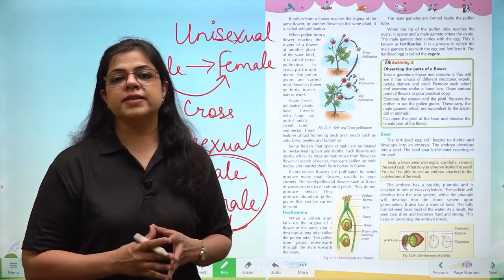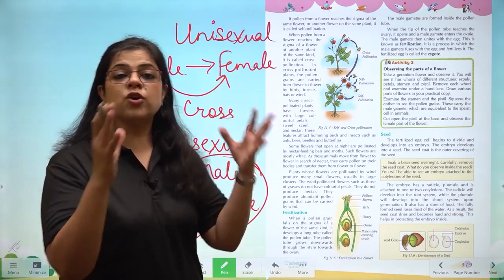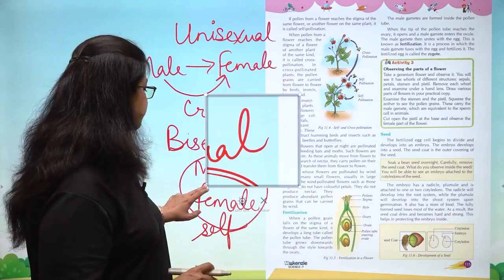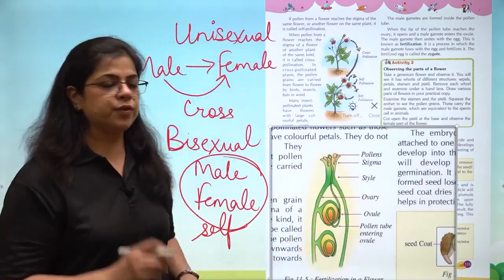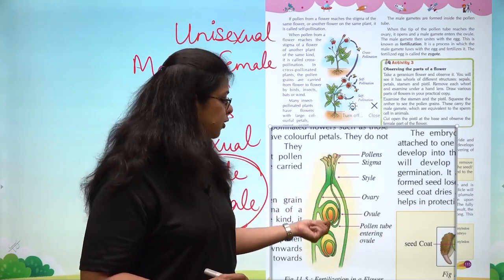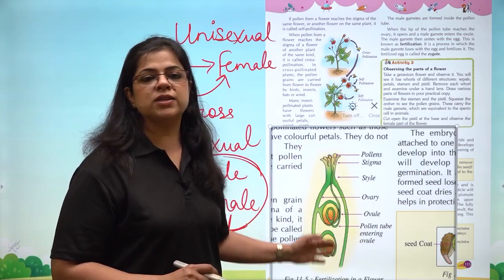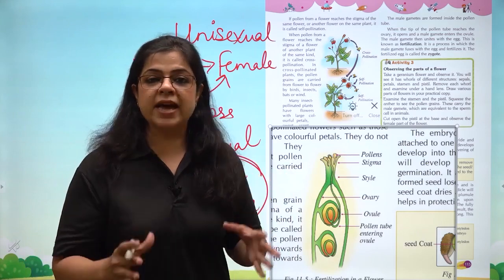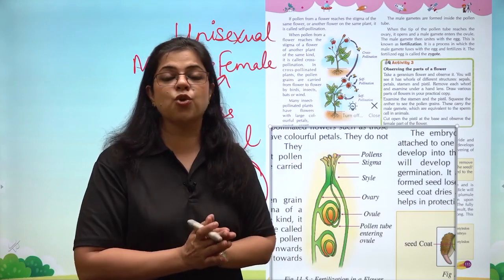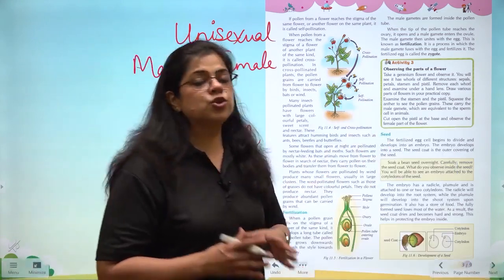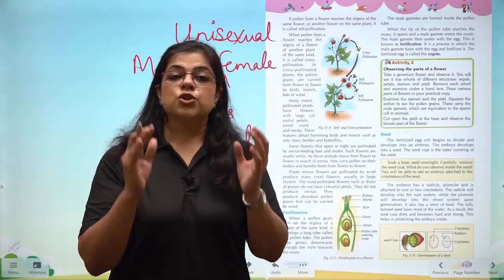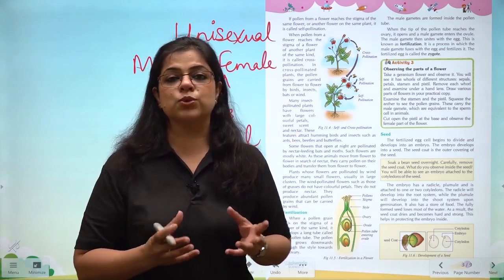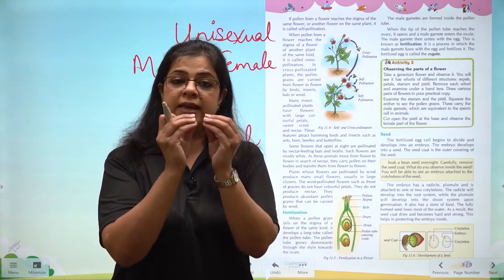Once pollen grains are transferred from the male part to the female part of the flower, the combination of male and female gametes takes place. This process is known as fertilization and it takes place inside the ovary. Pollen grains, when they arrive on the stigma, release a long tube that enters the style and reaches the ovary where the male and female gametes fuse together. This fusion produces a zygote. Once the zygote forms, the flower petals fall off and the ovary begins to swell up — its outermost parts become fleshy and juicy, with the seed in the center.